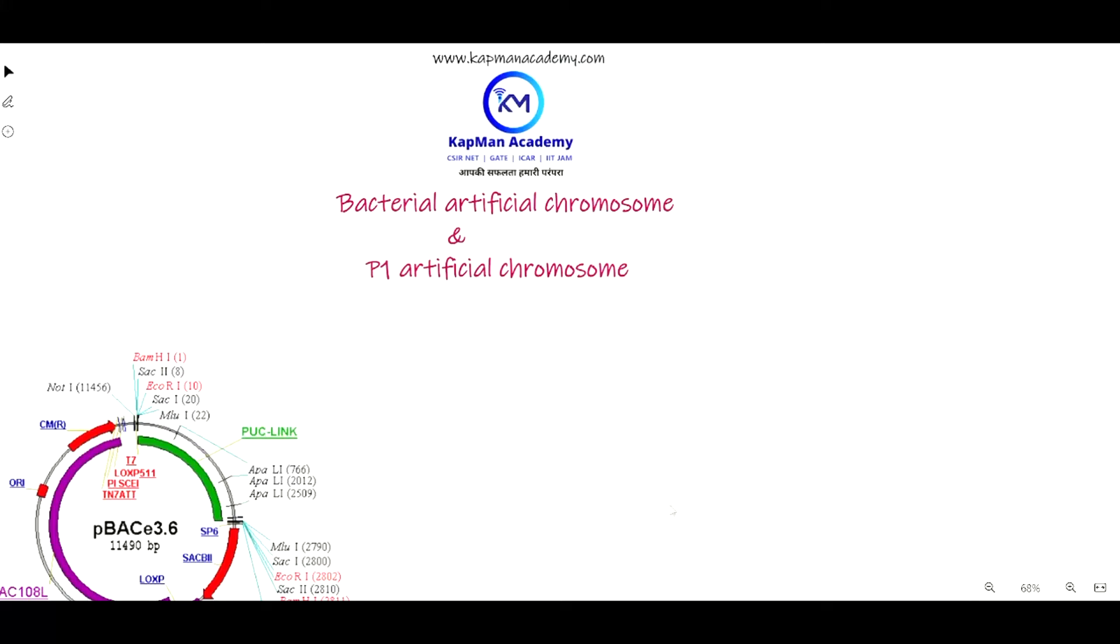Hello students, welcome to Kapman Academy. Today we are going to discuss two important cloning vectors known as bacterial artificial chromosome (BAC) and P1 artificial chromosome (PAC).